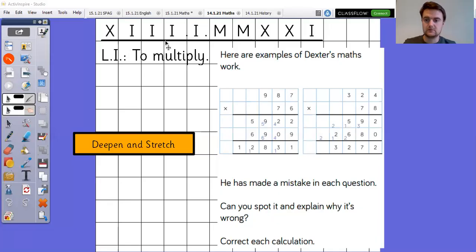So let's have a look at the lesson that we are doing today. Here are some examples of Dexter's maths work. He's made a mistake in each question. Can you have a go at solving, working out what mistake he's made and working out what the answer should be? So pause the question here, have a go at solving those problems. Can you be the teacher here with Dexter's work?